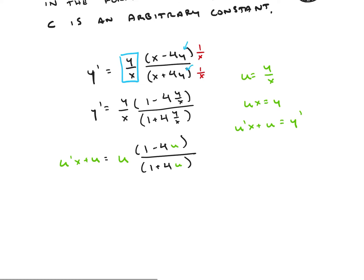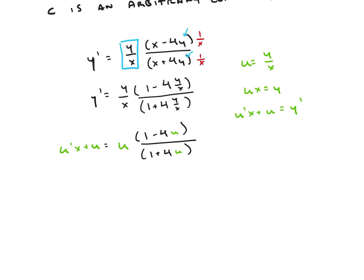All right, so I see I have some u's in here. I have some x's. Let's do some rearranging. So let's rearrange this a little bit, subtract that u from both sides. So I'm going to get u times 1 minus 4u over 1 plus 4u. And if I just subtract that and distribute it a little, I can say that that's minus 1.